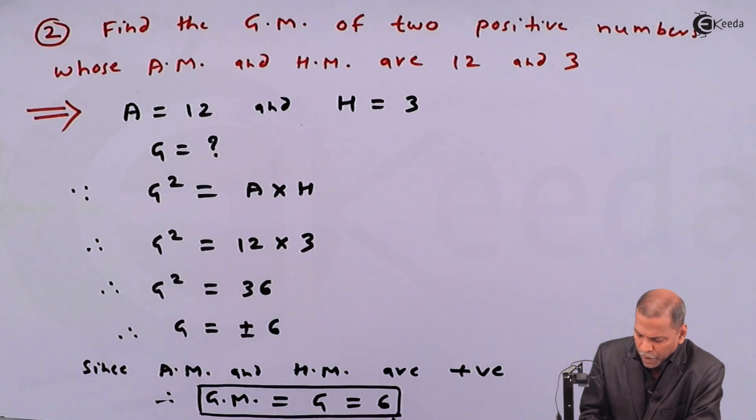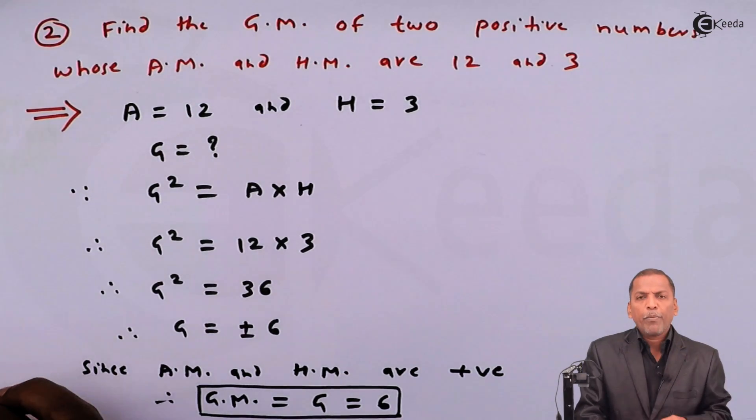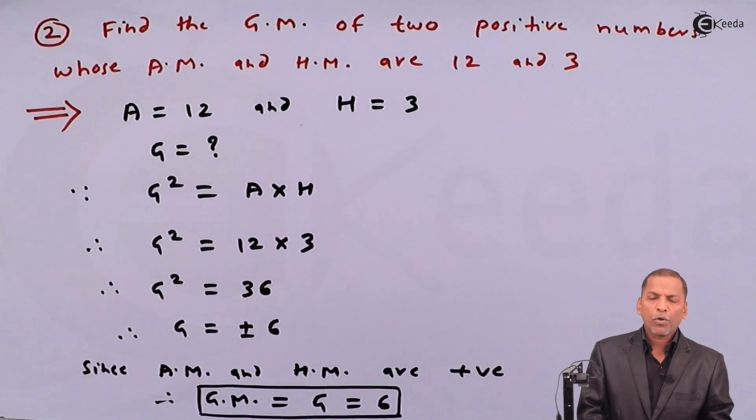So in this way, we get geometric mean G is equal to 6. This is the required solution for the given problem. Thank you.